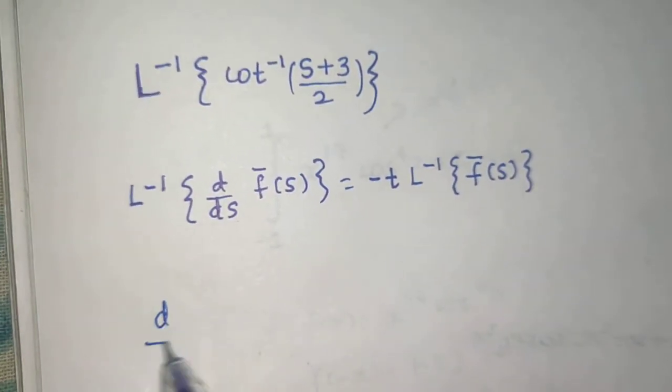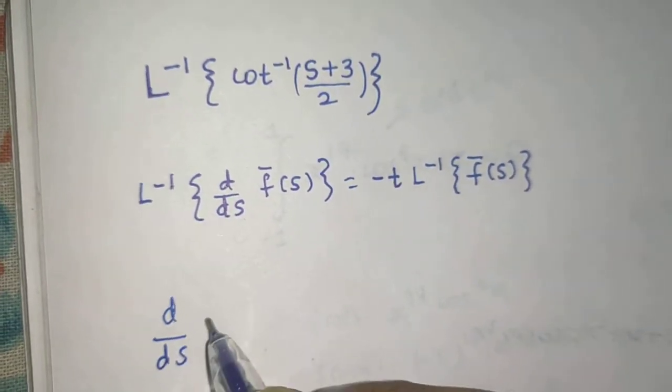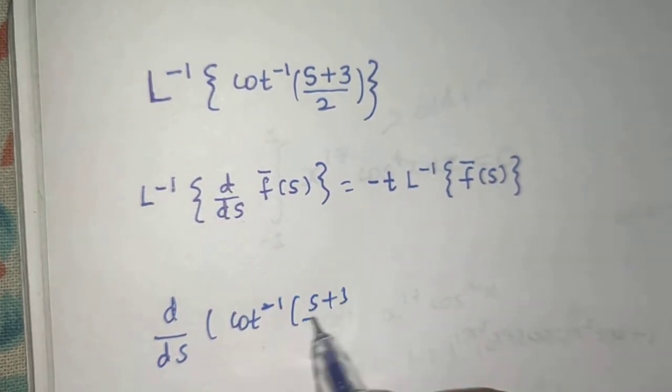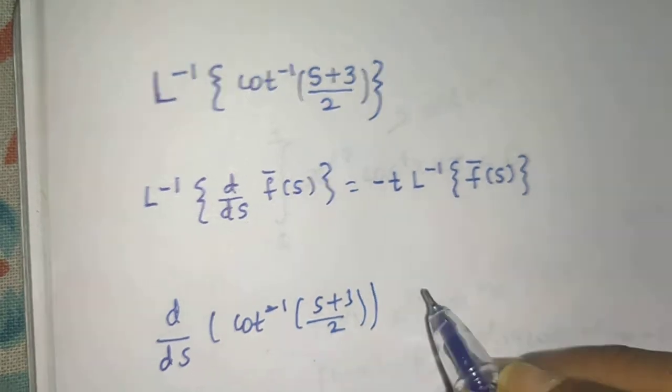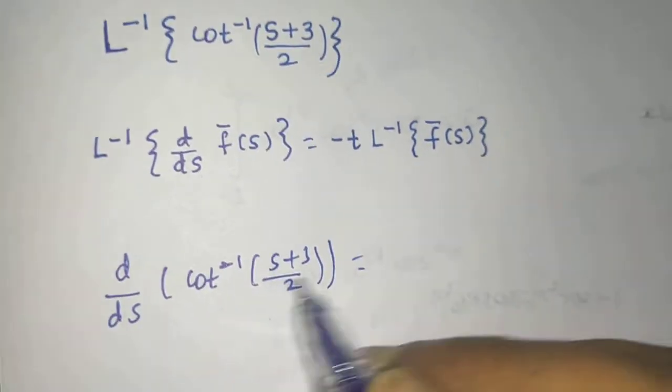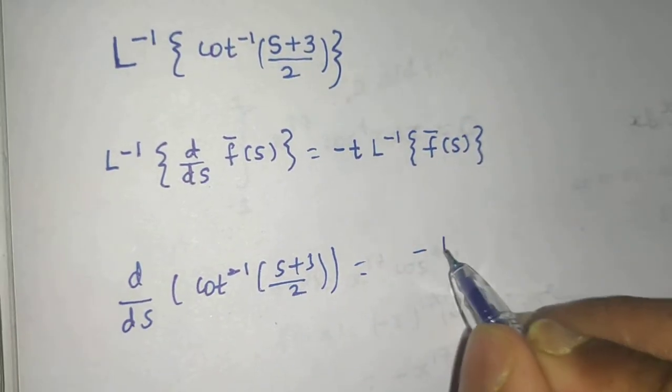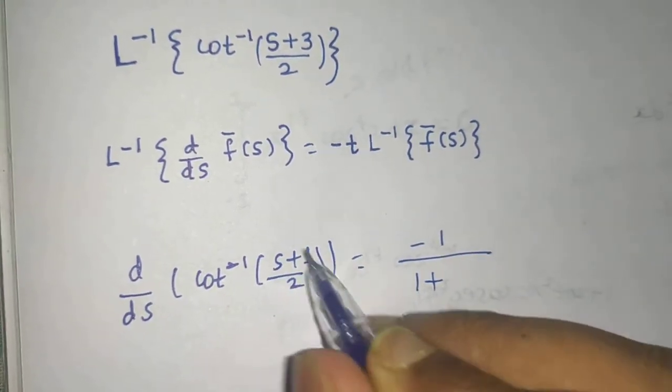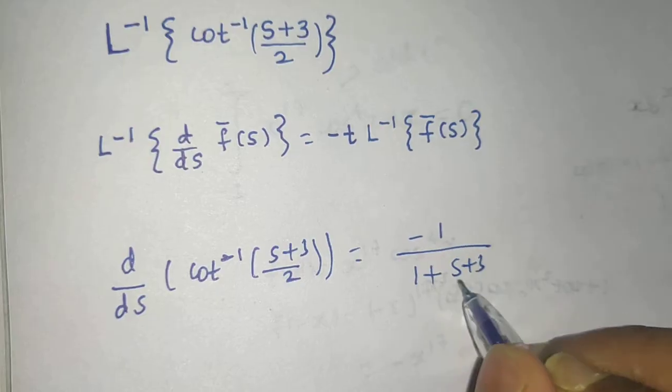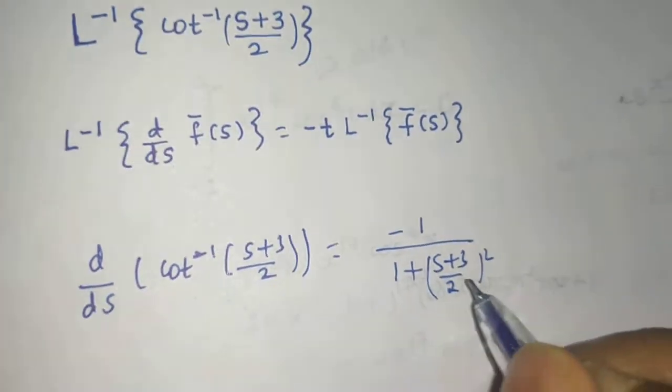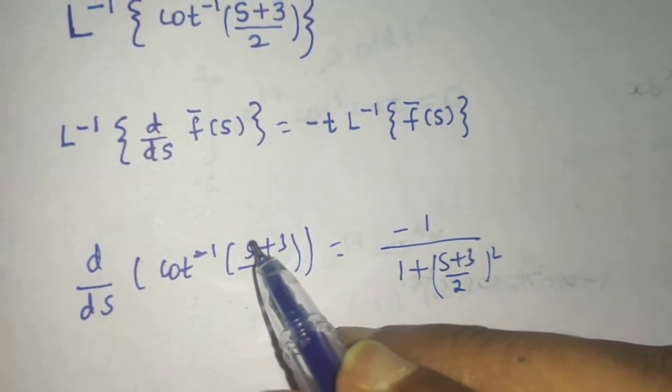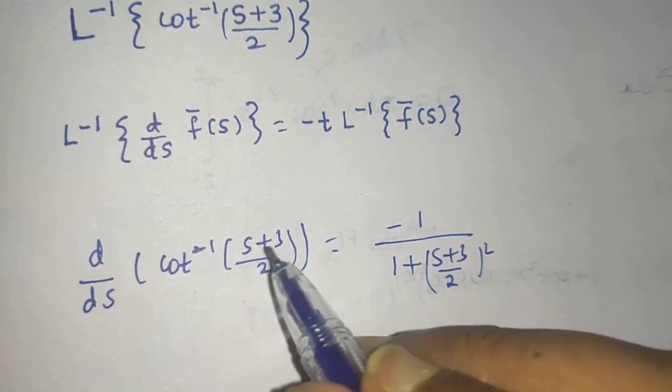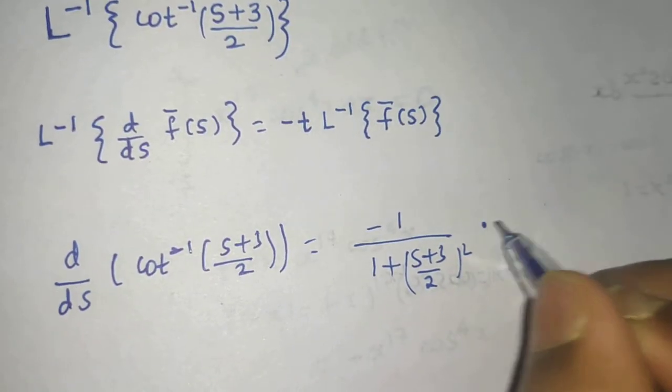Differentiating cot^(-1)((S+3)/2) with respect to S: the derivative of cot inverse is -1/(1 + ((S+3)/2)^2). Using the chain rule with S/2 + 3/2, the derivative of 3/2 is 0, and S/2 gives us 1/2.